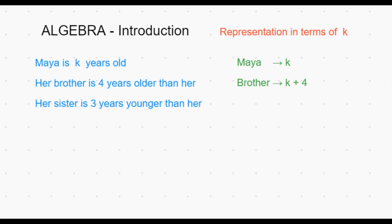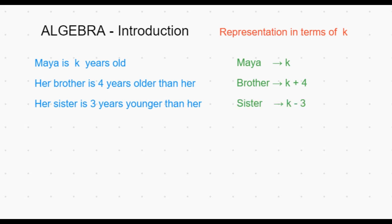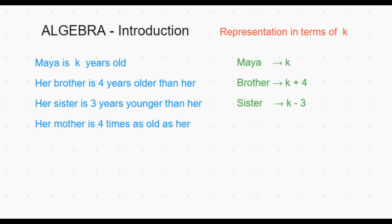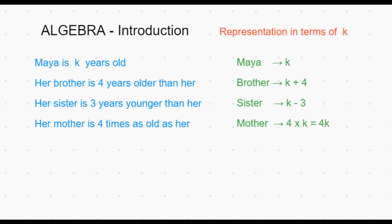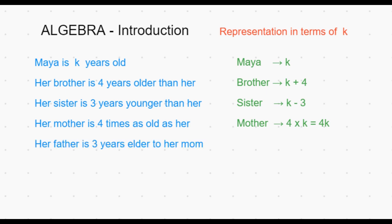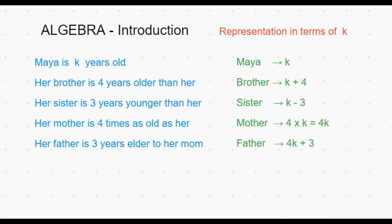Her sister is 3 years younger than her, which means her sister is K minus 3. We do not know Maya's age as such, but assuming Maya is K years old, we can represent everybody else's age in terms of K. Her mother is 4 times as old as her, which means her mother is 4 times K, which can also be written as 4K. Her father is 3 years elder to her mother. Her mom is 4K, so her father is 4K plus 3.